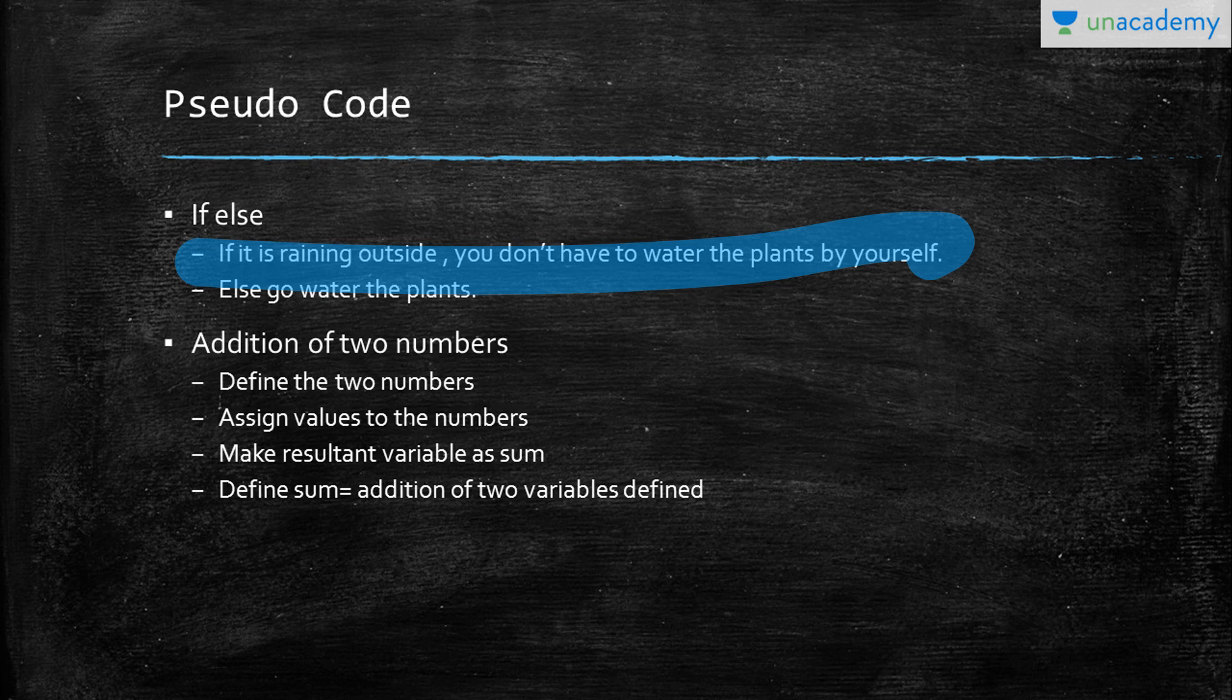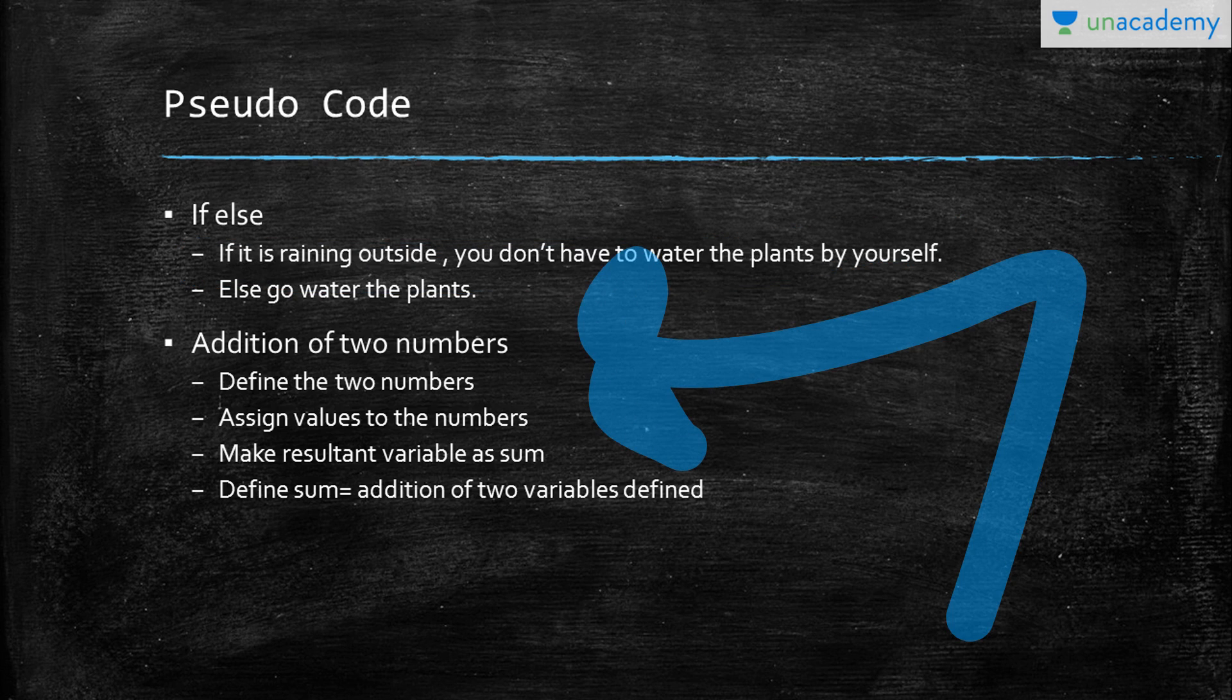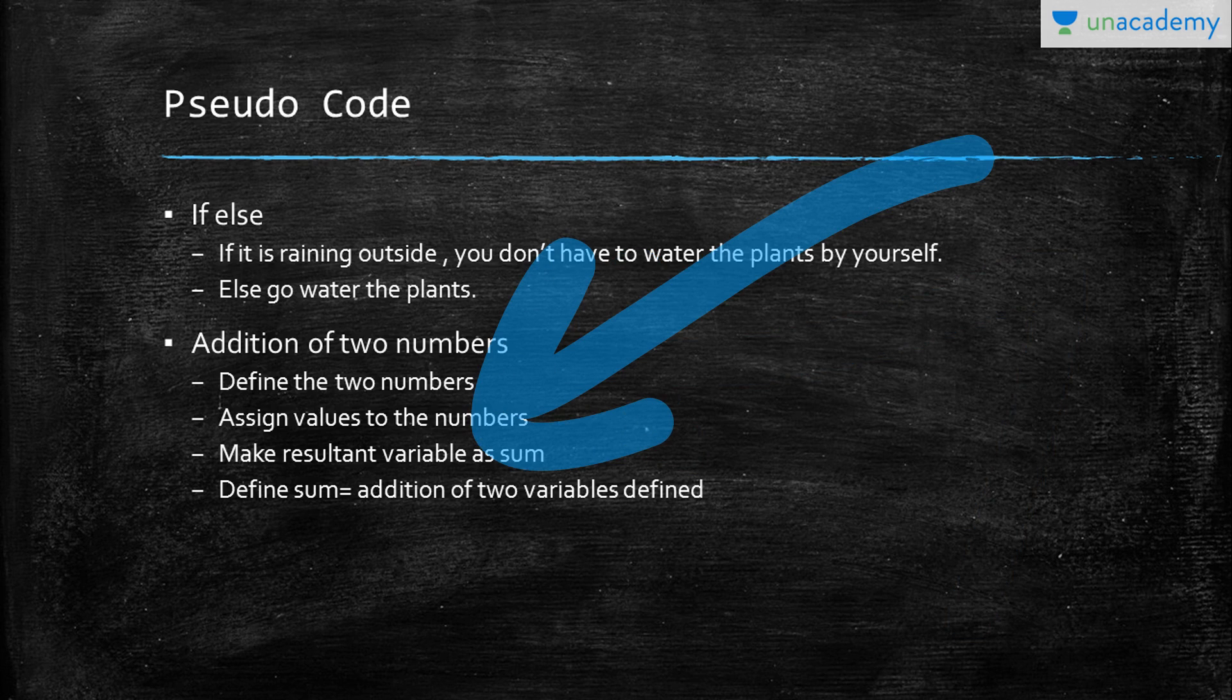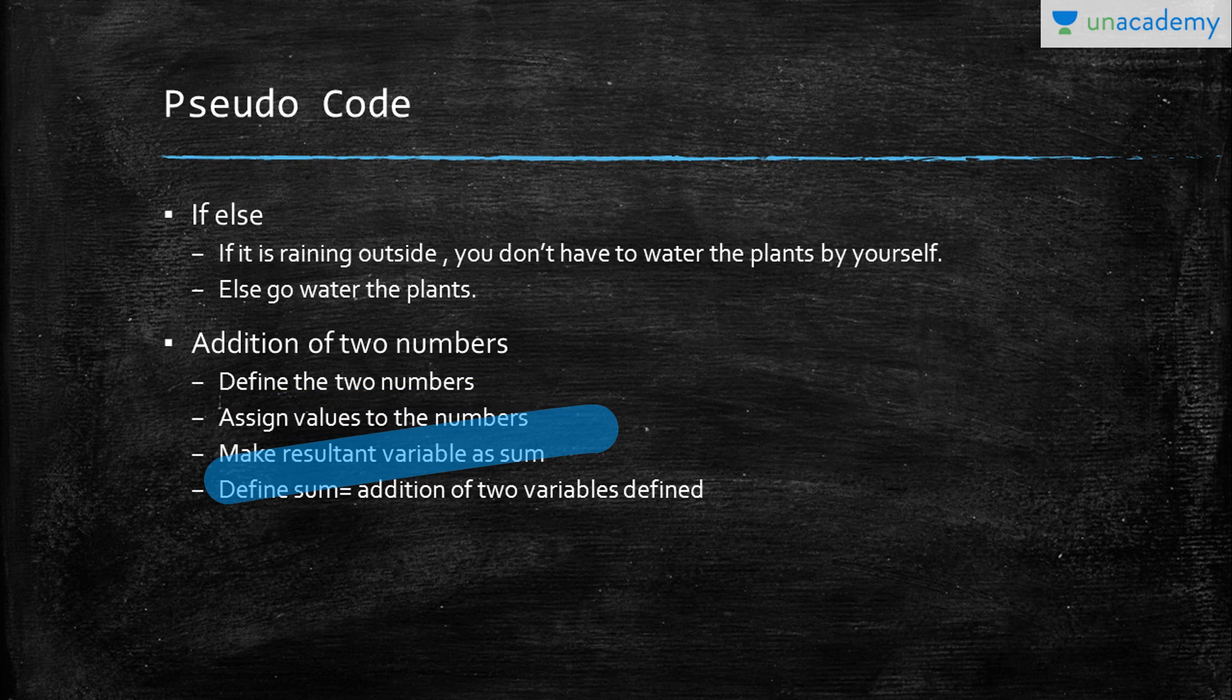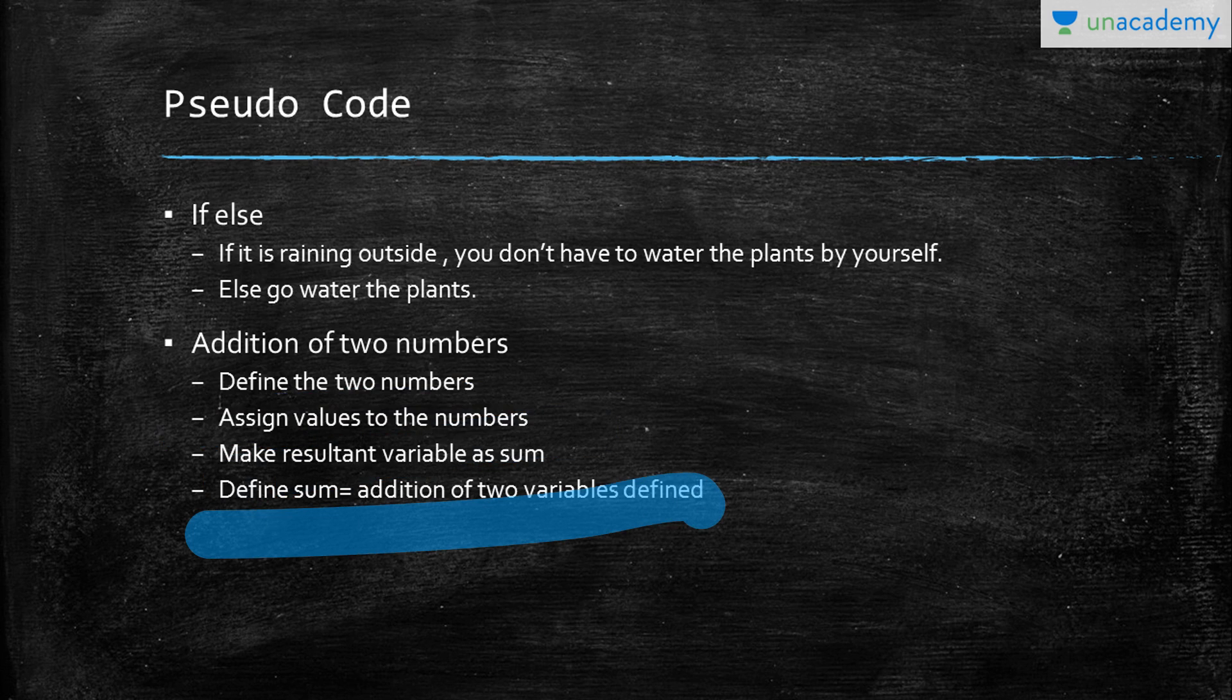Let's take an algorithm for addition of two numbers. As I've told you before, you have to think in a step-by-step manner and implement that in pseudo code. First, define two numbers, assign values to them, mark the resultant sum as a variable, then define the sum as the addition of two variables defined.